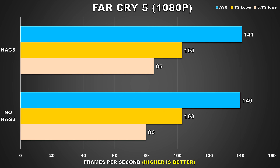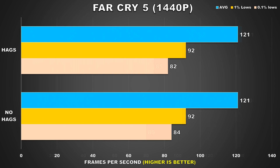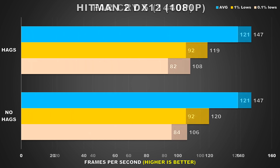First up we have Far Cry 5, and at 1080p we're pretty much looking at identical performance. Regardless of whether hardware accelerated GPU scheduling was on or off, the experience would be exactly the same. When we raise the resolution to 1440p and put more load on the GPU, nothing really changes — performance is pretty much exactly the same.